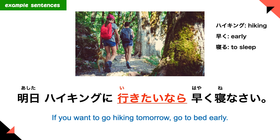'Ashita haikingu ni ikitai nara, hayaku ne nasai.' Ashita means tomorrow, haikingu is hiking. 'Haikingu ni ikitai nara' means if you want to go hiking tomorrow. Hayaku means early, neru means to sleep, so hayaku ne nasai means go to bed early.